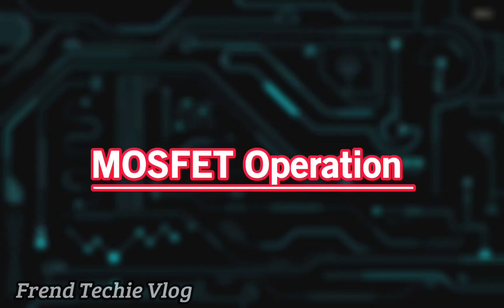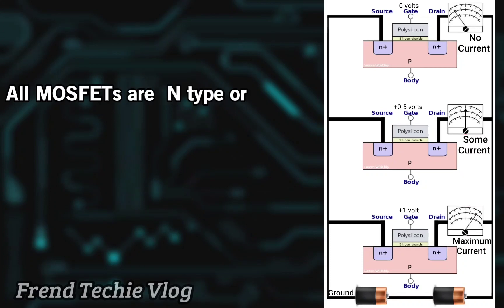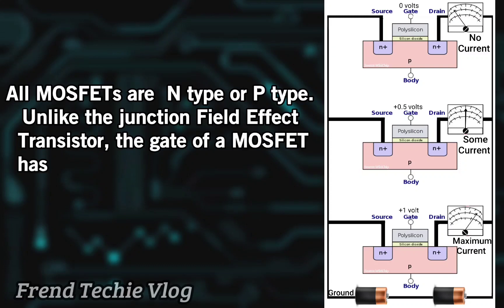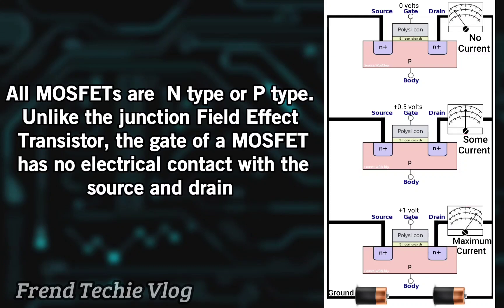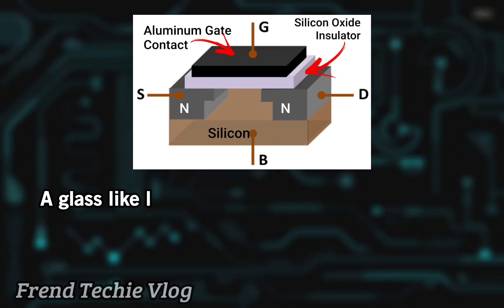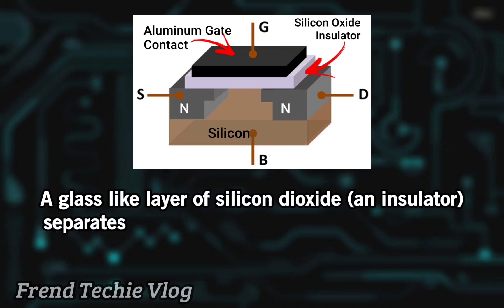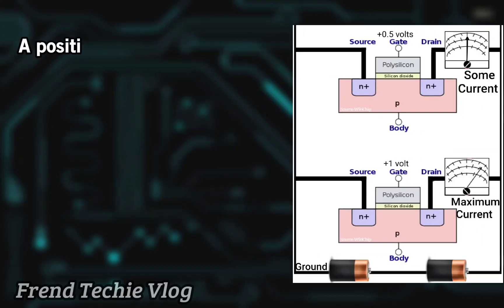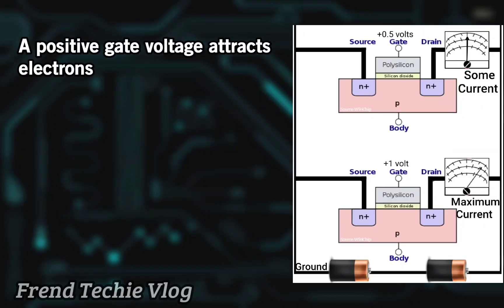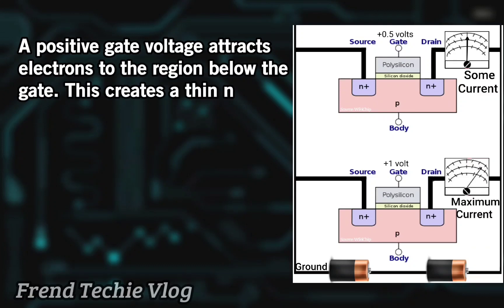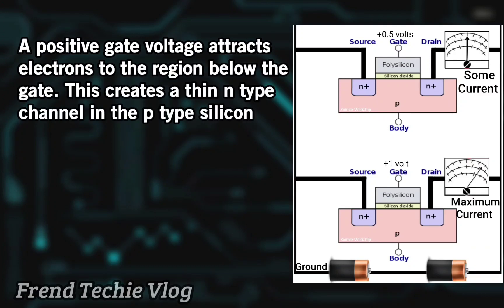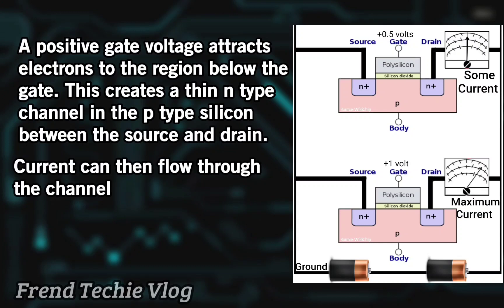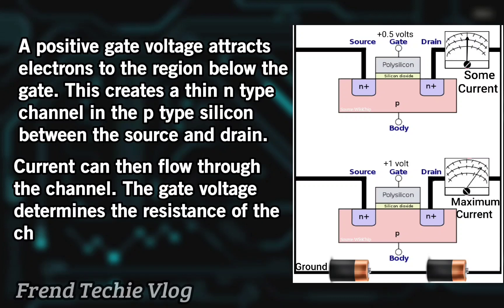All MOSFETs are N-type or P-type. Unlike the junction field effect transistor, the gate of a MOSFET has no electrical contact with the source and drain. A glass-like layer of silicon dioxide — an insulator — separates the gate's metal contact from the rest of the transistor. A positive gate voltage attracts electrons to the region below the gate, creating a thin N-type channel in the P-type silicon between the source and drain. Current can then flow through the channel, and the gate voltage determines the resistance of the channel.